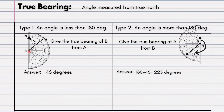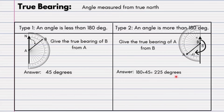For Type 1, you place your protractor at the center of point A and carefully read the angle — in this example we get 45 degrees. That is the answer for Type 1. For Type 2, you take 180 degrees and add the angle you measure from the straight line to point A. Placing the protractor at point B and measuring gives 45 degrees, so the total is 180 plus 45 equals 225 degrees. Only Type 2 can get confusing as you have to flip the protractor and measure from the other side.